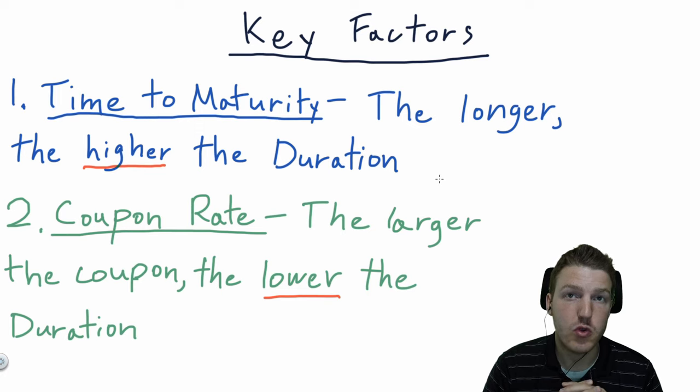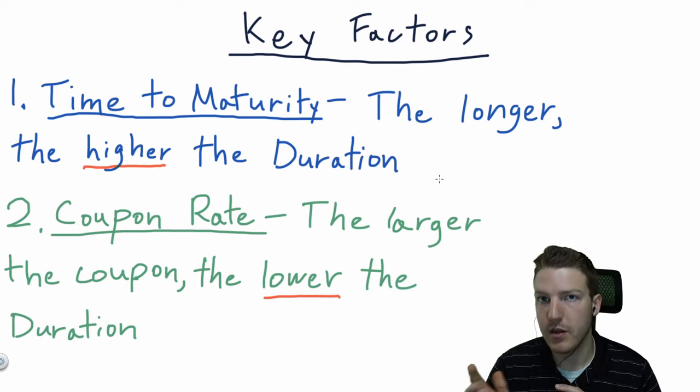So it's very sensitive to the time to maturity. The second factor is the coupon rate. So the larger the coupon rate, the lower the duration.